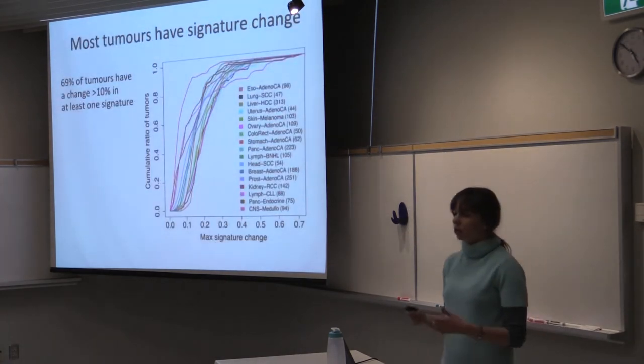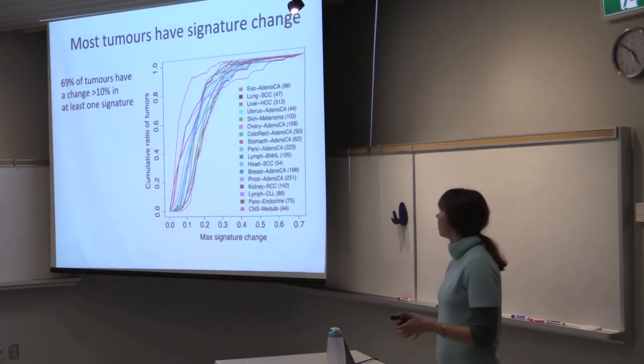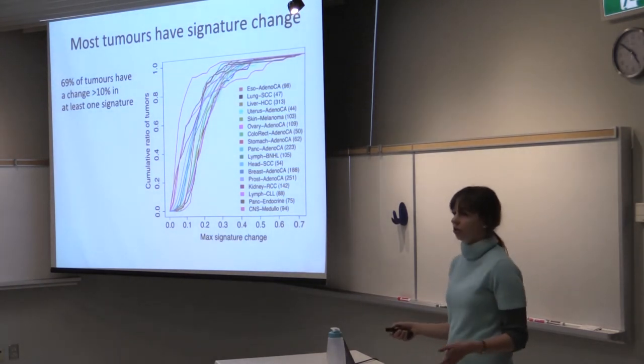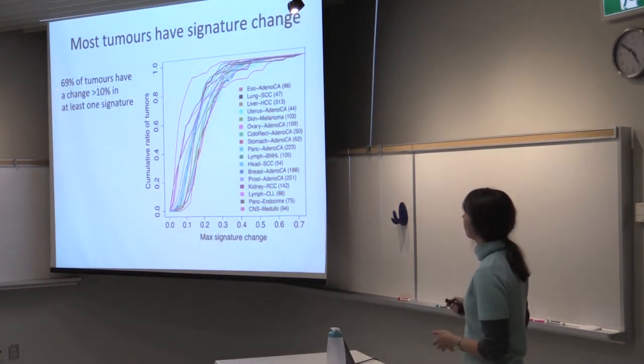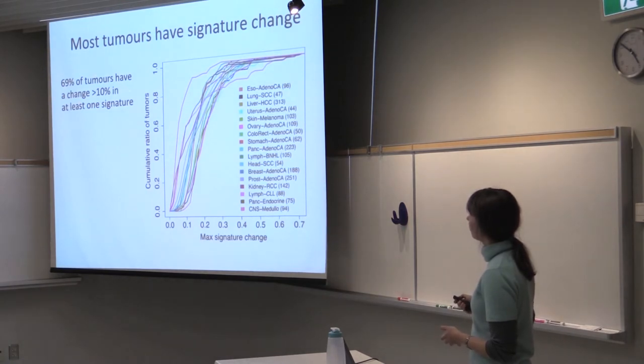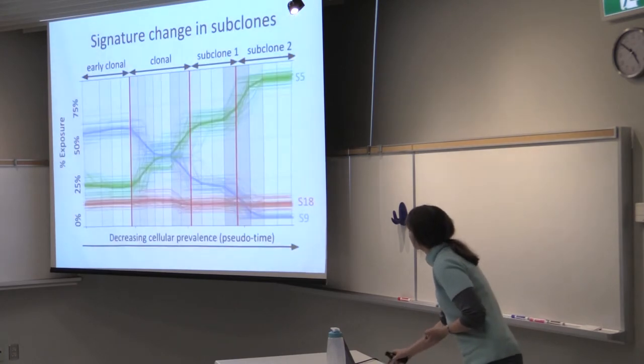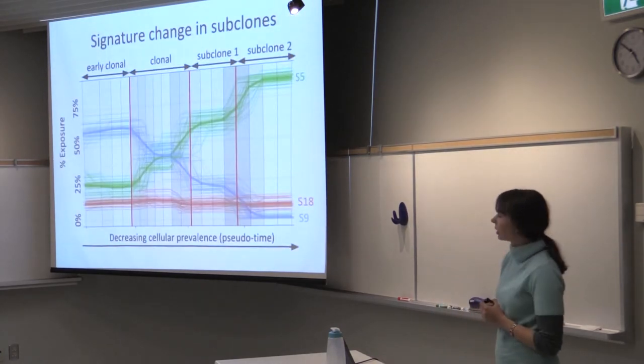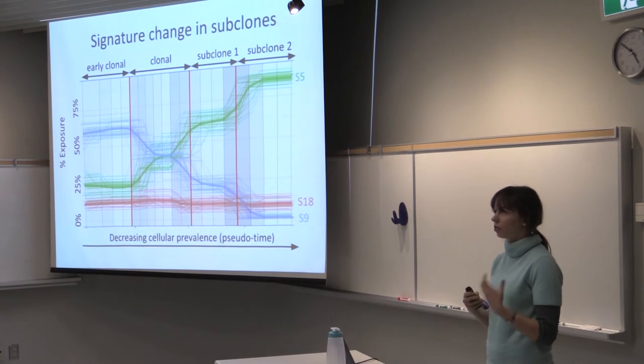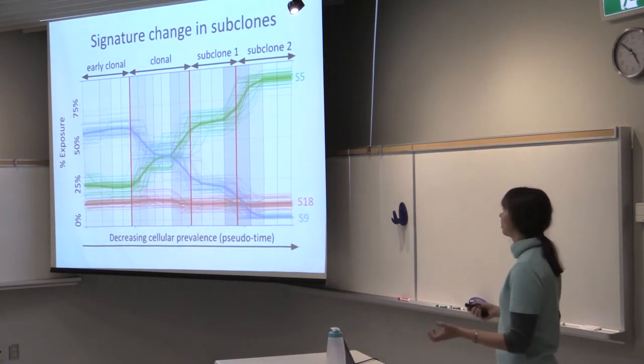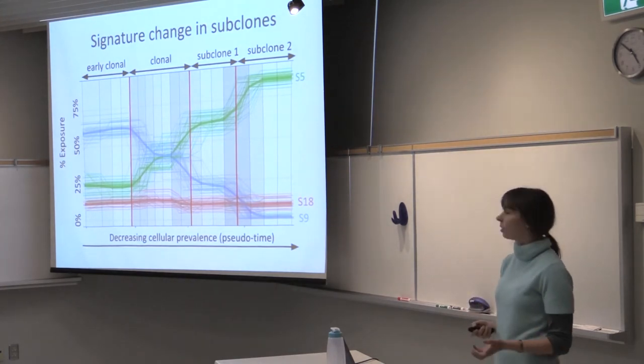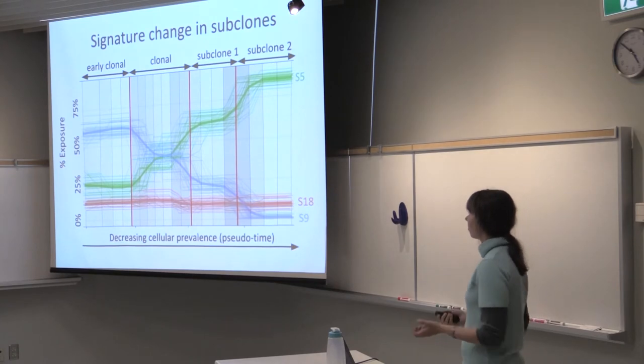Overall, we see that most of the tumors have a large change in signatures, or almost 70% of tumors have a signature change greater than 10%. And also, we notice that the change in signature trajectories corresponds very well with the clonal sub-clonal boundaries.